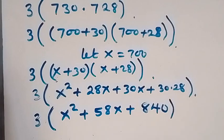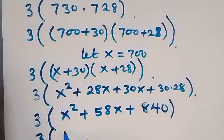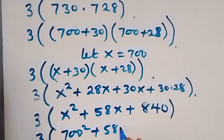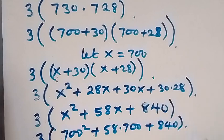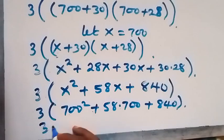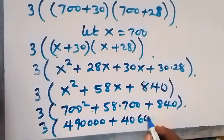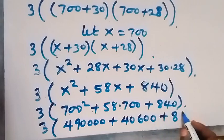From here, we can substitute the value of x, which is 700. So we have 3 into bracket 700 squared plus 58 multiplied by 700, then plus 840. We have 700 squared, which gives us 490,000. Then 58 times 700 gives us 40,600.